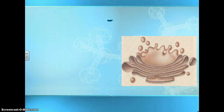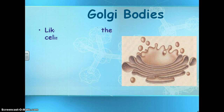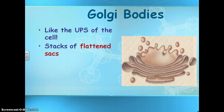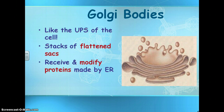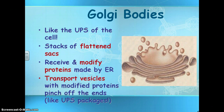This is a Golgi body. Your Golgi body is like the UPS of the cell — it is stacks of flattened sacs. They receive and modify proteins made by the endoplasmic reticulum, and they package them and send them out in little transport vesicles. Those pinch off the ends like the blobs on a lava lamp.